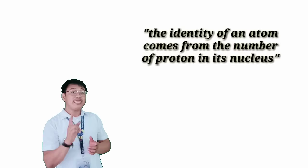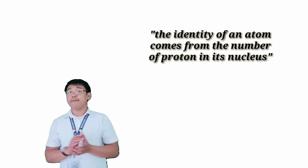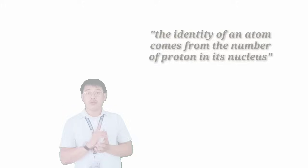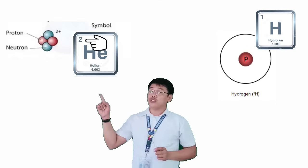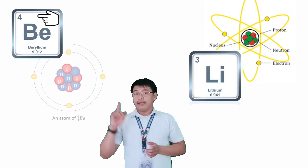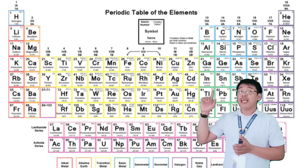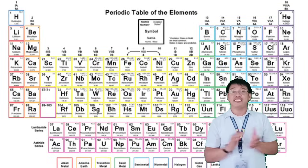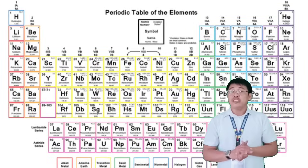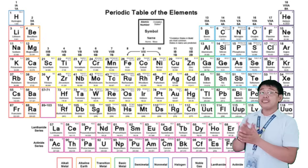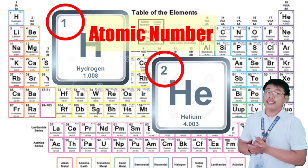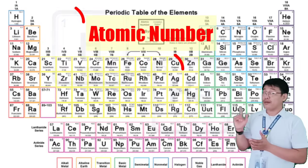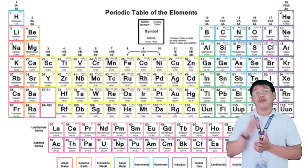Now remember this, the identity of an atom comes from the number of protons in its nucleus. Hydrogen has one proton, helium has two protons, lithium has three, beryllium has four, and so on. This means that no elements or atoms have the same number of protons. So if you are going to look at the periodic table, the elements are arranged according to increasing number of protons and we call it atomic number. We will study this further in the next chapters.